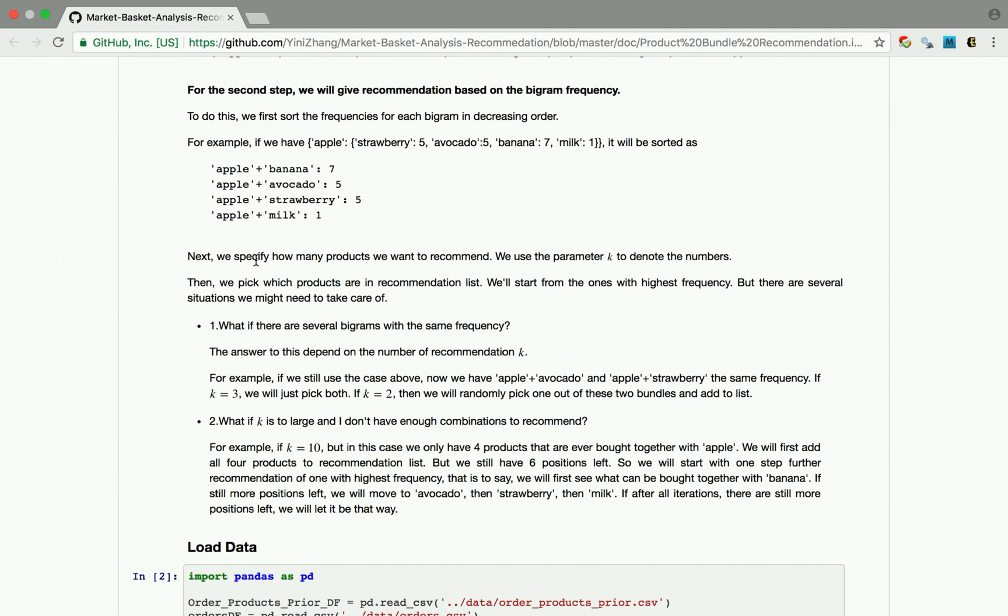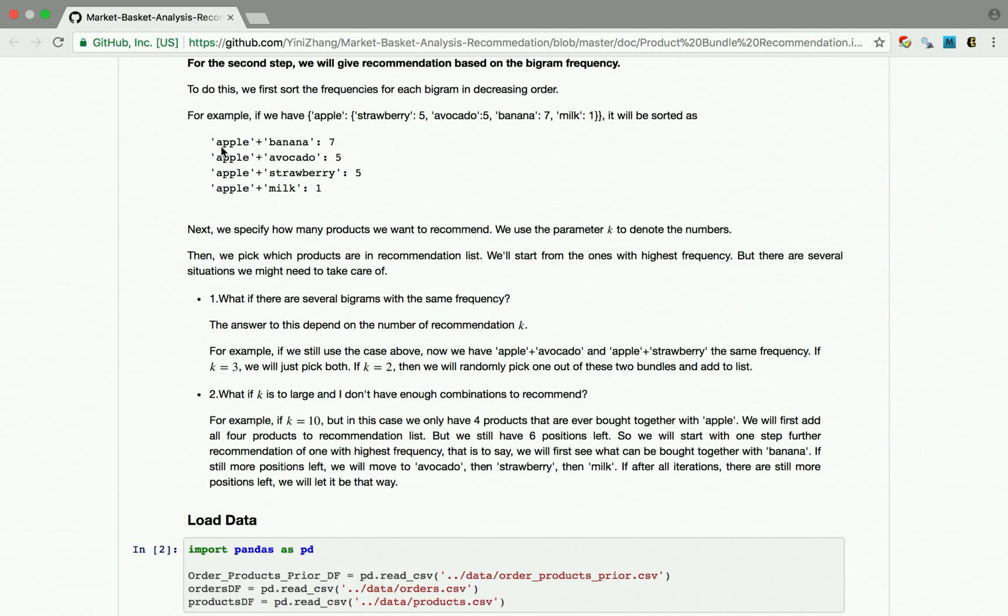For example, if we have a bigram that is sorted in a descending order like this and we want to get a recommendation for apple, we specify how many products we want to recommend for apple and we denote that parameter as k. And then we compare k with the number of products in the bigrams, which in this case is 4. And if k is 3, we will recommend banana, avocado and strawberry from the highest frequency to the lowest. And if k is 2, we will first recommend banana and randomly pick 1 in avocado and strawberry. But what if k is so large and we don't have enough combination in the bigrams to fit that recommendation list? For example, if k is 10, so in this case we will first pick all the products in the bigrams, we will put banana, avocado, strawberry and milk in the list, and then we will generate the recommendation following the same rule for banana and use that to fit the list for apple.